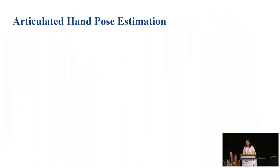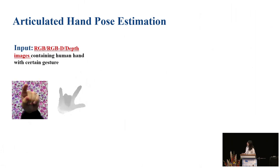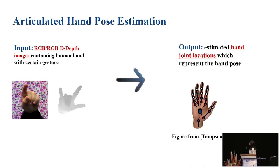To start with, let me briefly introduce what is articulated hand pose estimation. In this field, the input can be RGB, RGBD, or depth images containing human hand with certain gesture. We wish to get the output of estimated hand joint locations which represent the hand pose. If we can get the 21 joints of the hand, we can form the skeleton of the whole hand.